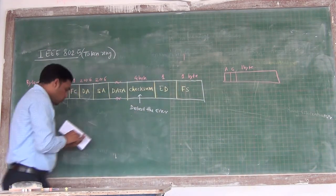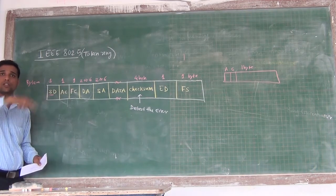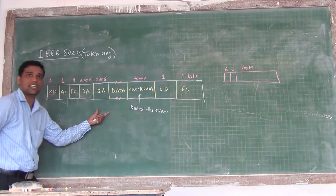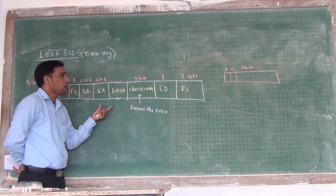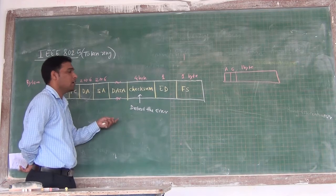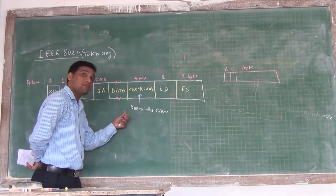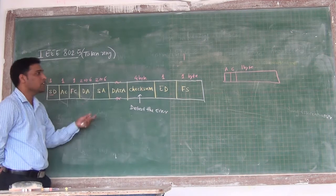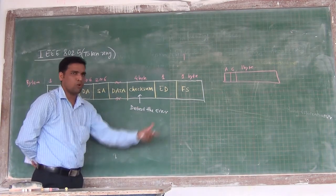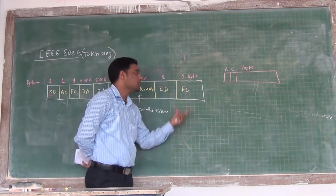The frame is basically circulating through the ring. When the frame reaches a station, the station decides how to take action — either retransmit the frame if it has data, or retransmit the token if there is a free token.